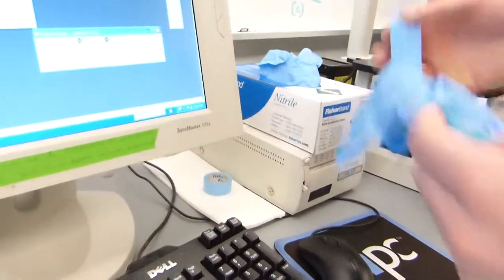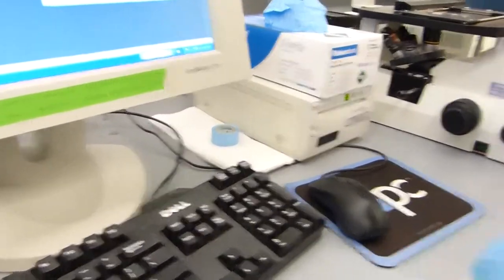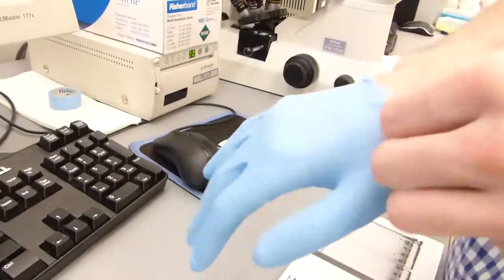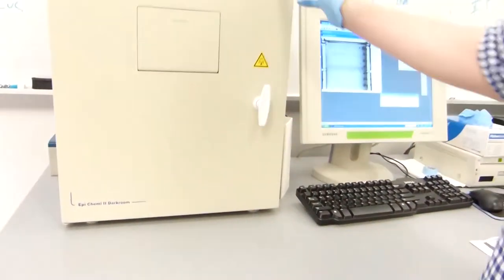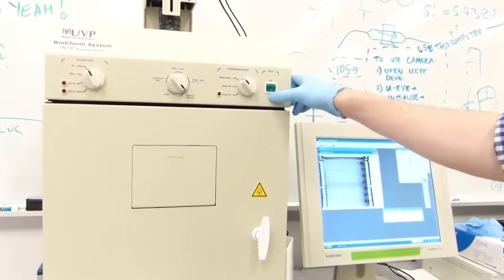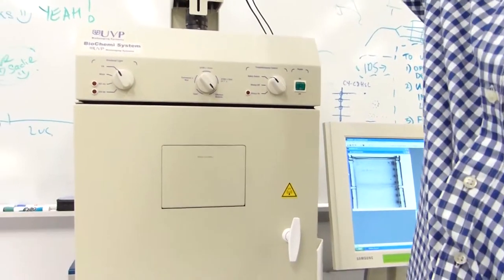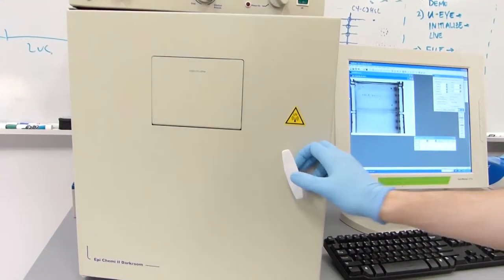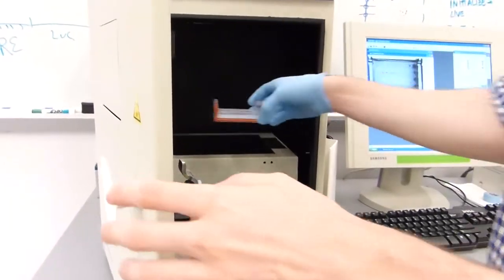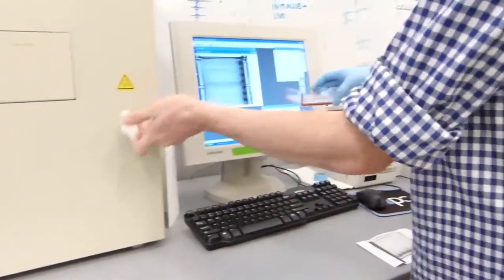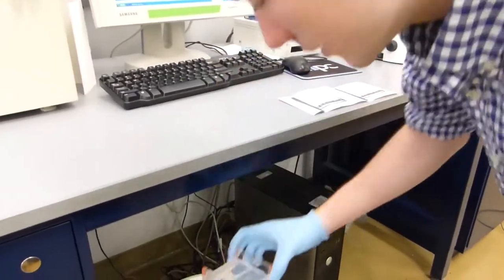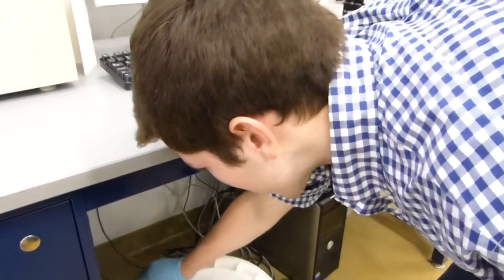After you are done printing, you will want to put a glove back on and then power off the box and power off the camera. From here, you can open the box, take out your gel and dispose it in the appropriate ethidium bromide trash pack.